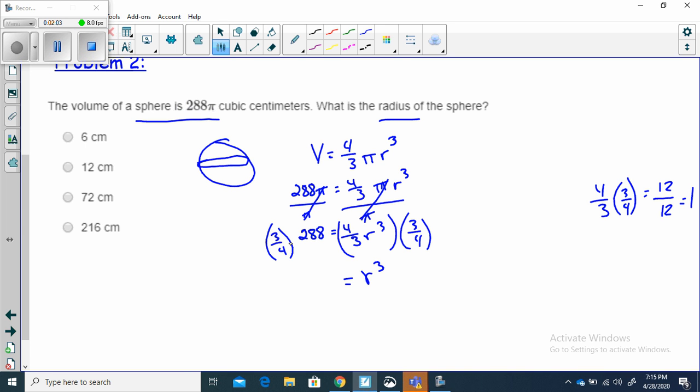3 times 288 divided by 4 would give me 216. Okay. So I need to know, this is r³ is 216. I need the opposite of a cube, which is a cube root. I need to take the cube root of each one of these.